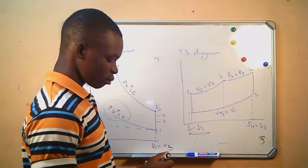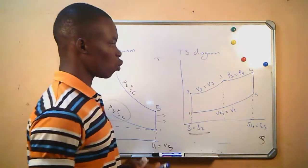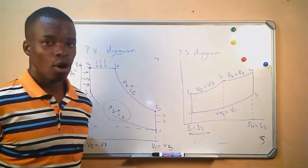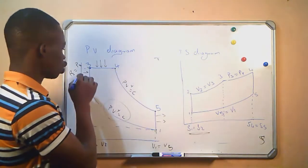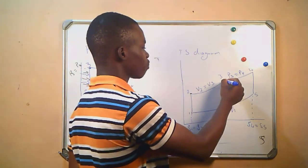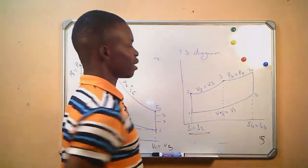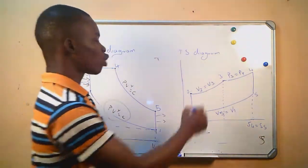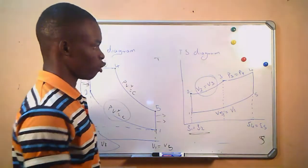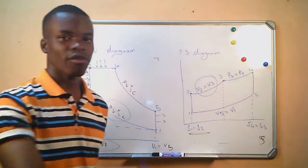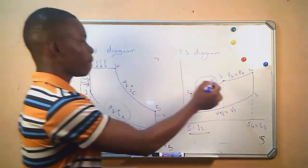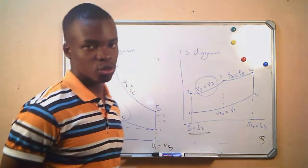And then from number 2 to number 3, that is where we get the first phase of combustion. We know combustion — heat is added into the system, and therefore our entropy will increase from S2 to S3. There will be an increase in entropy, which will take place at constant volume. Our combustion at this phase will take place at constant volume. And then from 3 to 4, we have the second phase of combustion, which takes place at constant pressure, where we have pressure number 3 being equal to pressure number 4.